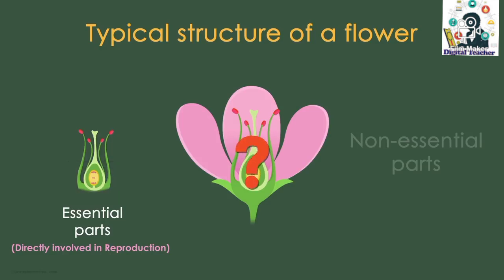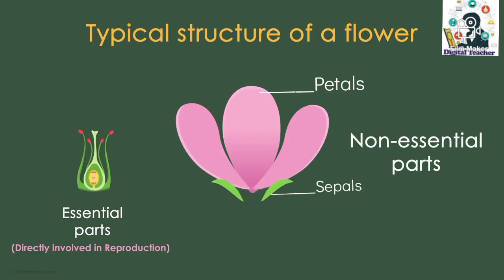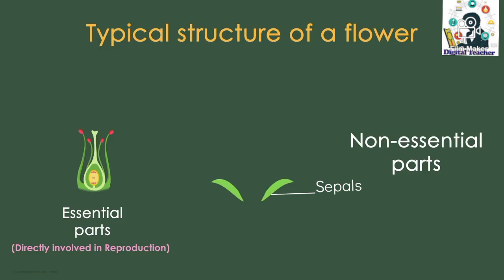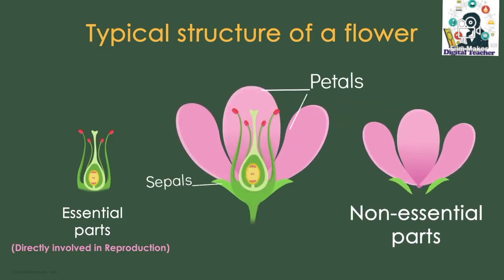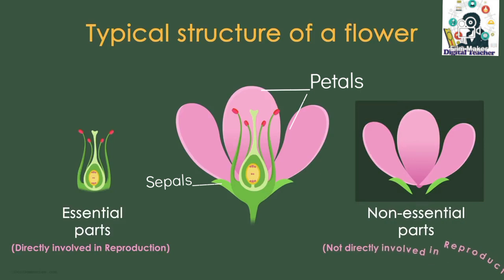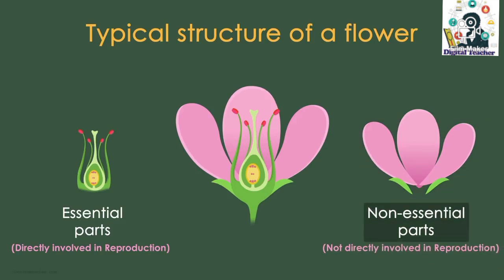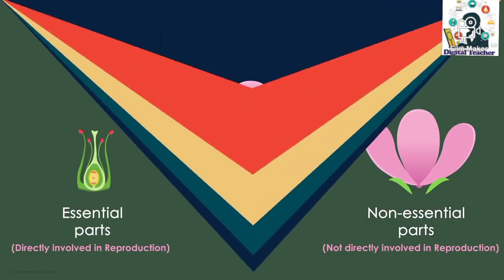But what are the other parts of the flower? The non-essential parts of a flower include the petals and the sepals. The petals and sepals are not directly involved in reproduction. This is why they are called the non-essential parts. Now let's discuss each of these parts in detail.